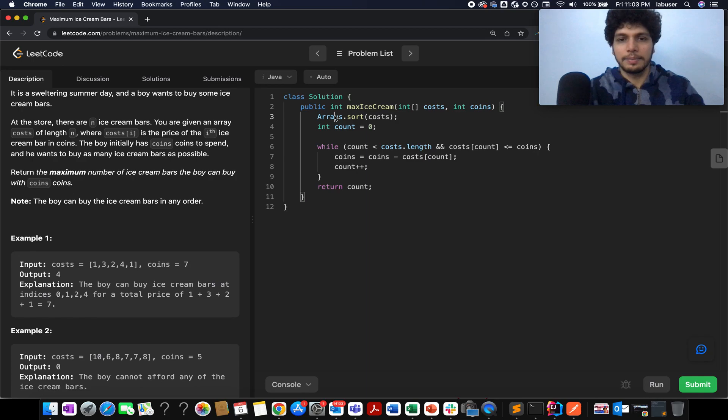As I stated in the presentation, I'm going to sort this array. I've created a counter variable which is count. While my count is less than the total number of ice creams that I have and my cost at the current counter variable is less than or equal to the total money that I have, I'm going to keep on buying those ice creams. So the remaining money gets updated to coins minus cost of the current ice cream, and with each iteration we increment the count variable. Once we are out of the loop, we simply return the count variable and let's try and submit this.